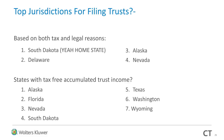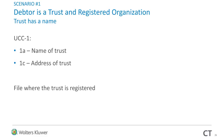Trust filing scenario one: the debtor is a trust and a registered organization, and the trust has a name. On your UCC-1, box 1A, you enter the name of the trust and the address of the trust, and you file where the trust is registered. This is pretty straightforward — just like a corporate filing in many situations. Nothing more, nothing less.